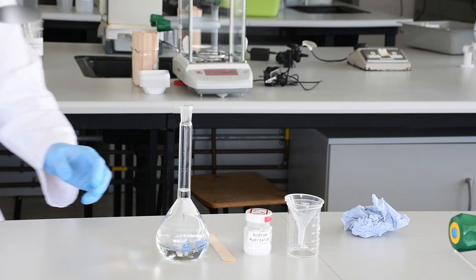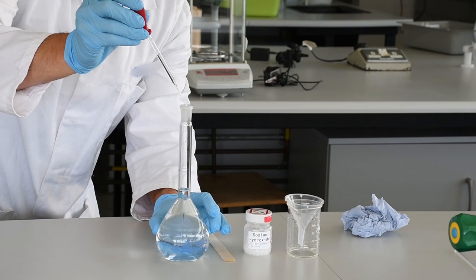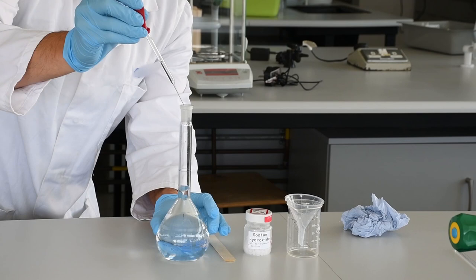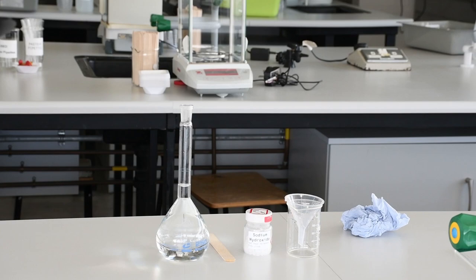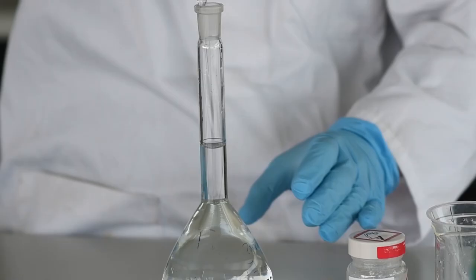When making measurements, you want to make sure there's no parallax, and we're using a Pasteur pipette so we can add the liquid drop by drop. You'll see on the volumetric flask that the marking goes all the way around the edge, and you'll know there's no parallax if you're looking on from the edge and you can't see the other side of it.